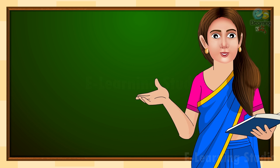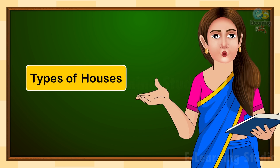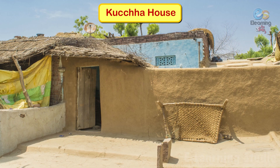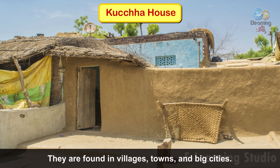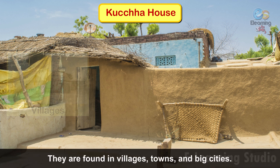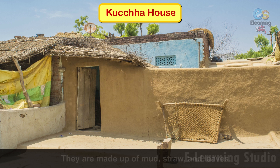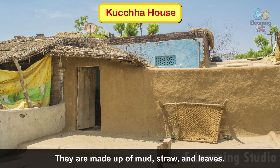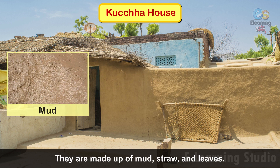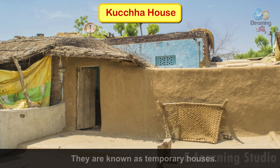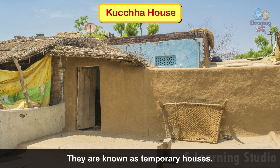Let us know about the most popular types of houses in India. Kaccha houses — children, they are found in villages, towns and big cities. They are made up of mud, straw and leaves. They are known as temporary houses.